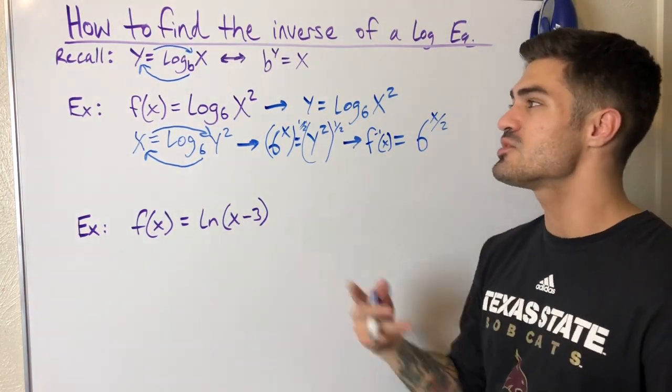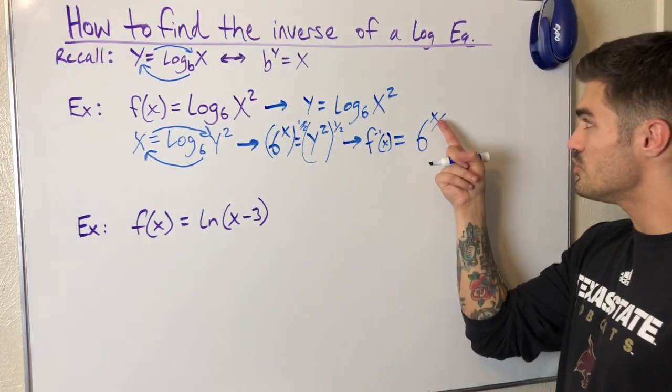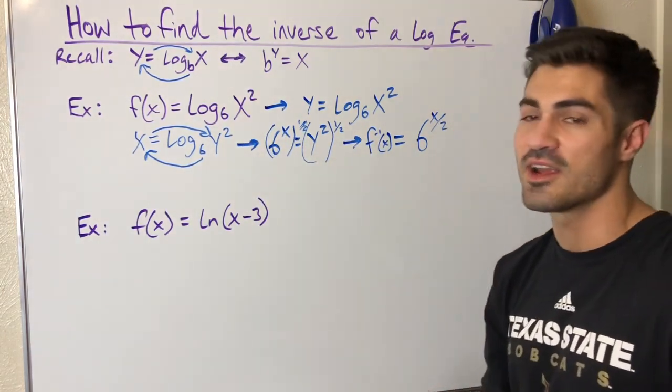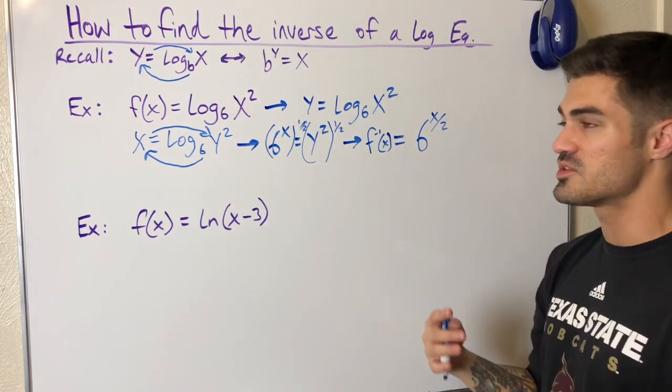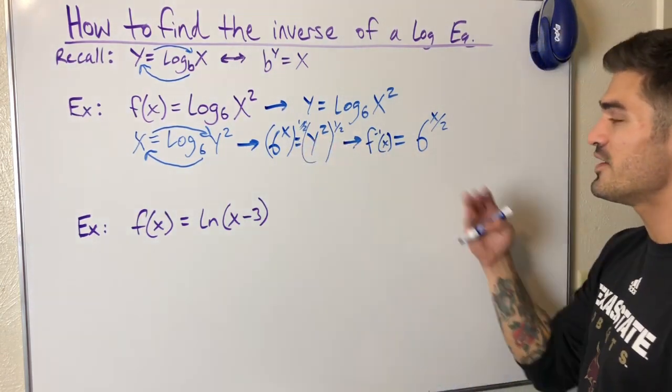I'm going to replace this y with inverse notation, which is f to the negative 1—but it's not negative 1, this means the inverse. So 6 to the x over 2 power. Since these are inverses, I can plug this function into this function and I'll just get x, and the same works vice versa.